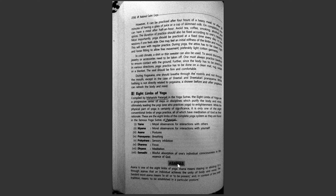The eight limbs of yoga were compiled by Maharshi Patanjali in the Yoga Sutras. They are: Yama — moral observances for interaction with others; Niyama — interactions with yourself; Asanas — postures; Pranayama — breathing; Pratyahara — sensory inhibition; Dharana — focus; Dhyana — meditation; and Samadhi — a blissful observation of one's individual consciousness in the essence of God, realizing the superior presence guiding and motivating you.